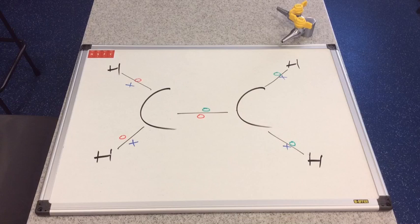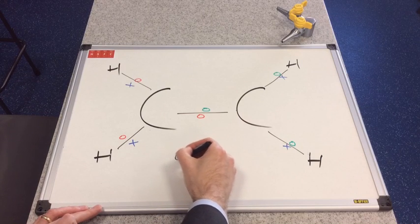Right, these one, two, three, four, five covalent bonds have all got something in common. They're all classed as what we call sigma bonds.